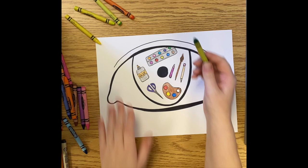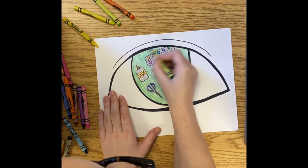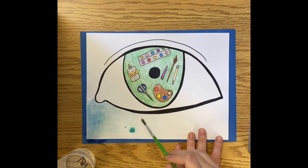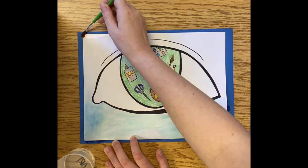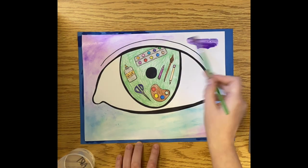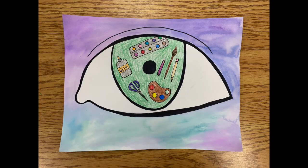I chose to color in the background of my iris green because I have green eyes, but you can color it whatever color eyes you have. And now I'm doing the outside of my eye. I chose to do watercolor for this because I think it makes it look really dreamy, but you can color it however you would like.